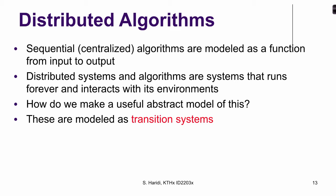In contrast to distributed algorithms, a sequential algorithm can be modeled as a function from input to output, so we don't really need to model it as a state transition system — though many actually do, and there are semantics for describing sequential programs this way. But when we move to distributed systems and distributed algorithms, these are systems that run forever and interact with the environment, so the most common way to describe them is by modeling them as a transition system.